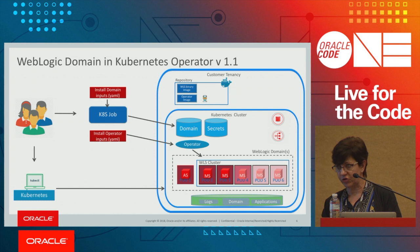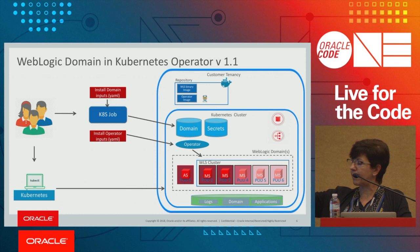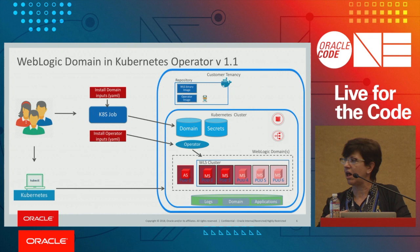You can also autoscale using the WebLogic Diagnostic Framework, where you set rules on metrics; when the rule is met, it invokes a REST call to the operator's REST endpoint, which scales the WebLogic cluster. Because we export WebLogic metrics to Prometheus, you can also set Prometheus rules that invoke a REST call to the operator to create a scaling action.